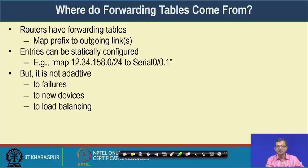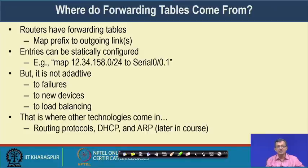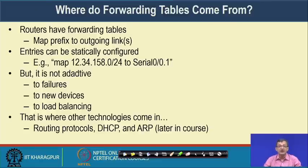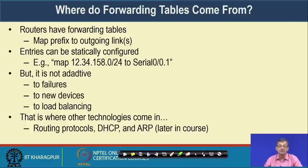Where do the forwarding tables come from? Routers have forwarding tables that map prefixes to outgoing links. One way is static entries — manually mapping a network to a serial port. However, this is not adaptable to failures, new devices being added, or devices being removed, requiring manual intervention. There are also issues of load balancing.